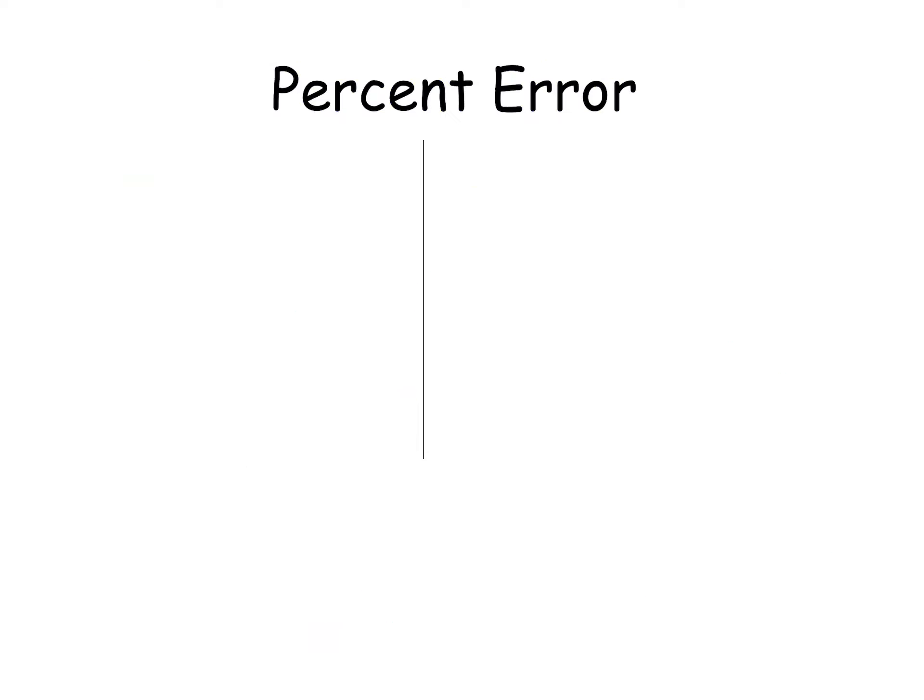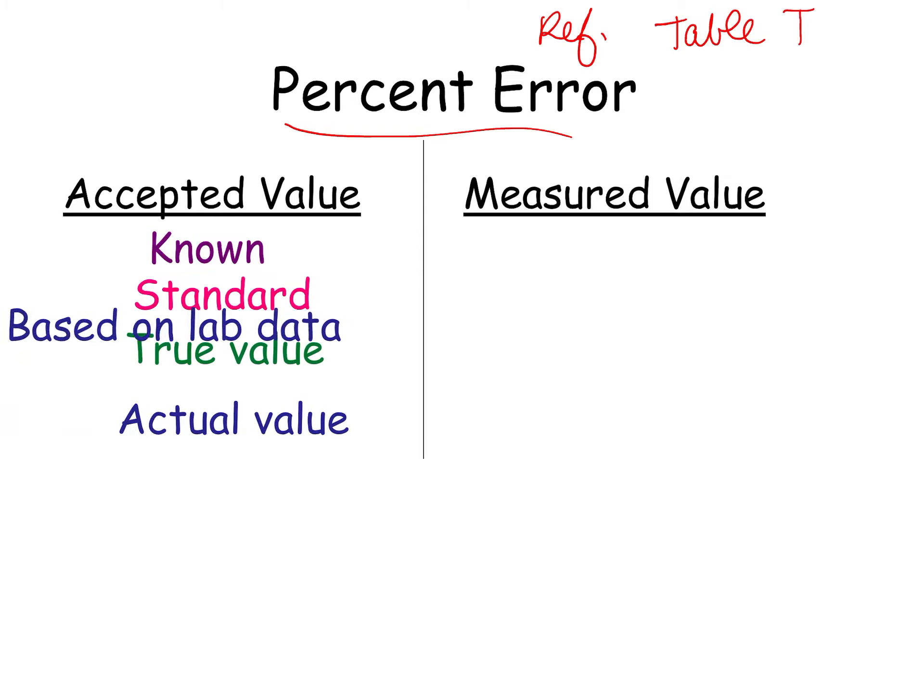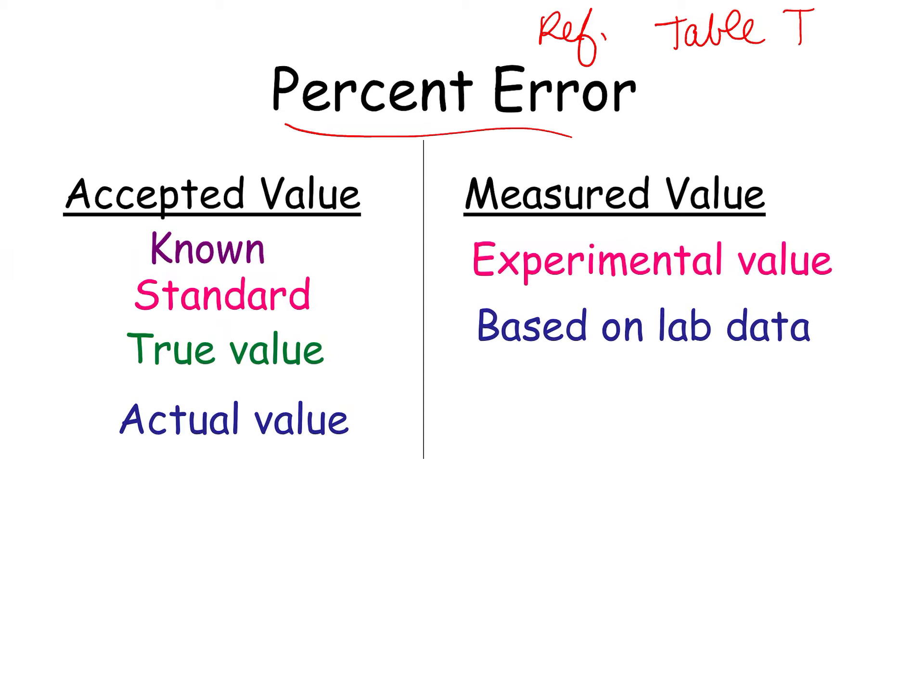So, a way to figure out quantitatively how good your lab data is, is to do a percent error. So, let's make sure you're looking at reference table T. Reference table T on the back includes the formula for percent error, which we'll get to in a second. So, we have accepted values and we have measured values, but you need to be prepared for synonyms, words that mean the same thing. Because depending on your word problem, you might see different ones. So, things like the known, the standard, a true value, actual value, these are all synonyms. They mean the same thing as accepted. Measured value is where there's some error. These are things that are based on lab data. These are experimental values. Anything that is a student, a student obtained, these are measured values.